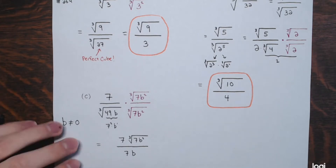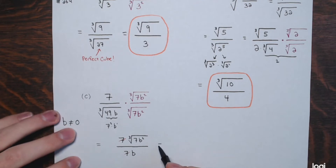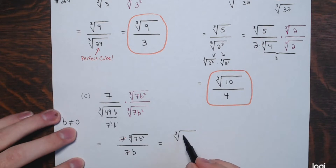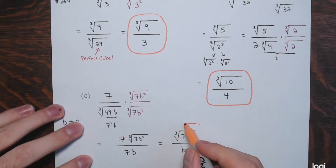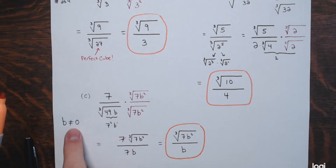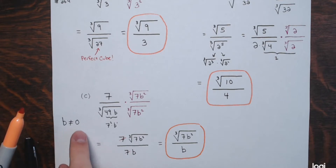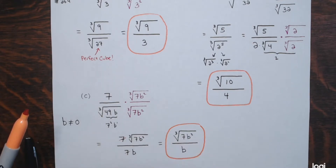There's a common factor of 7 in numerator and denominator — canceling those gives the cube root of 7B squared in the numerator divided by just B in the denominator. To verify, replace B with any non-zero number — 1, 2, 7, negative 5, whatever — plug it into both the original and final expressions, and you'll see they give the same value.